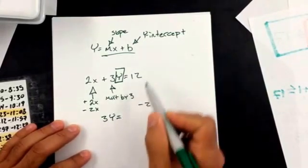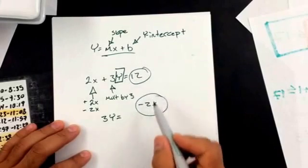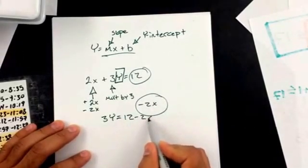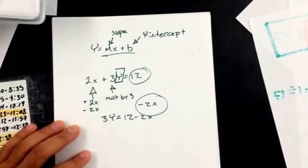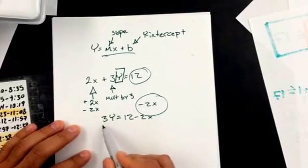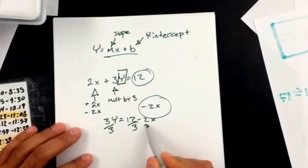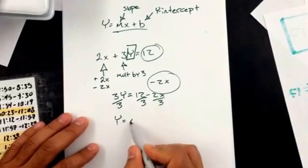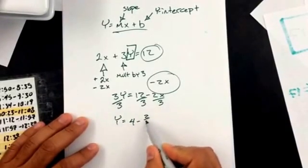12 minus 2x, those are not like terms. This is a constant and this has a variable. So I'm just going to put 12 minus 2x. Now I want to eliminate the multiplying by 3. To eliminate multiplication, I divide. Division property of equality says I can divide as long as I divide everything in the equation. y equals 4 minus 2 thirds x.